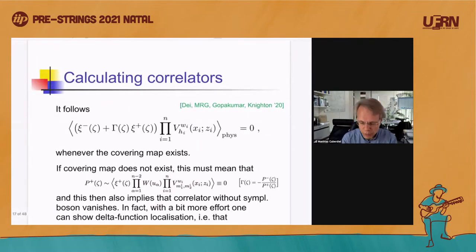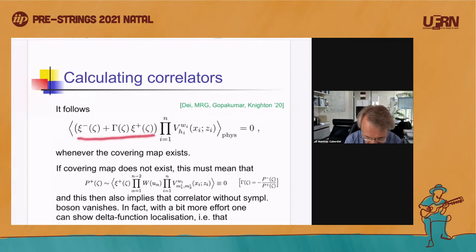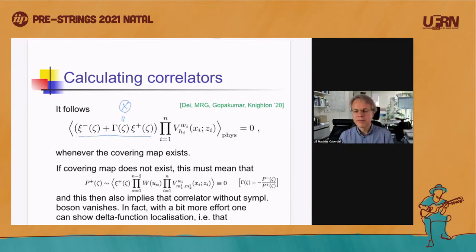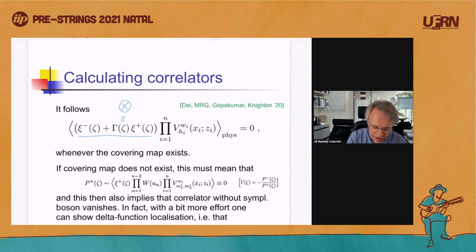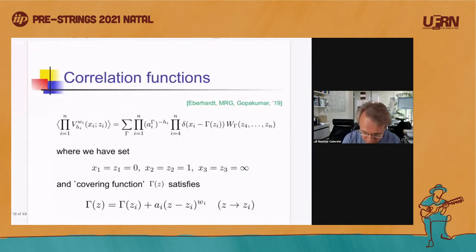One key message: this identity also looks suggestive from a twistor space perspective, because the relation P_minus + x · P_plus = 0 looks like an incidence relation in twistor space, where you think of the spacetime variable x as characterized by spinorial-type variables. This suggests that these variables really want to be twistor variables. This was the inspiration for generalizing to ADS-5, which I'm about to explain. But maybe there are questions about the ADS-3 case first.